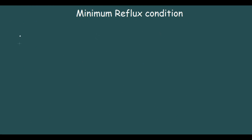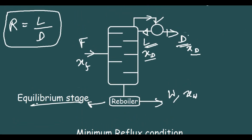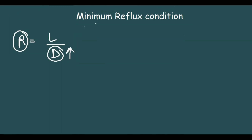For the minimum reflux condition, R equals L/D. If R is minimum, then D is maximum — meaning we are taking out the maximum from the top product and recycling the least. In this condition the tower is said to operate at the minimum reflux condition. Now let's see this graphically.